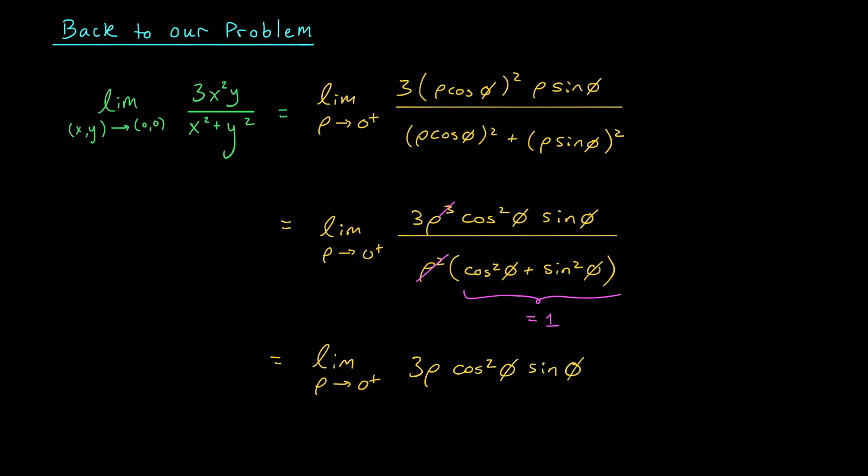At this point, you can really appreciate the power of converting to polar coordinates. You see, since ρ is going to 0, this first term, 3ρ, is also going to 0. What about the second term? Well, I'm not really sure what's happening here because φ could take on any value between 0 and 2π, right? We can be approaching the origin from many, many different angles. But one thing's for sure. This expression is bounded, right? It can't blow up to infinity. Cos² φ is always between 0 and 1, and sin φ is always between minus 1 and 1. So this expression is contained somewhere in the interval between minus 1 and 1. It's bounded.